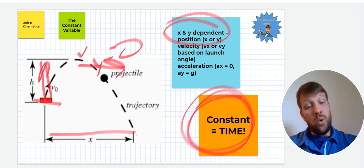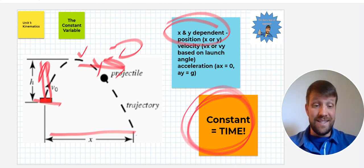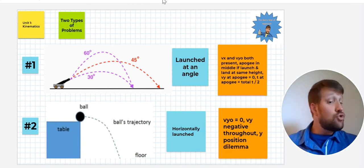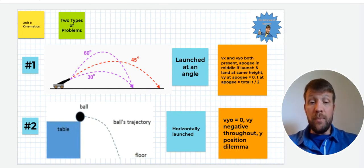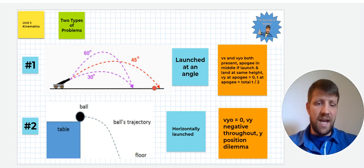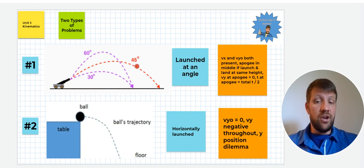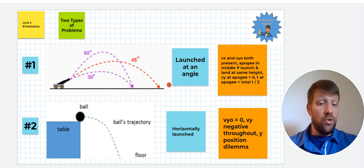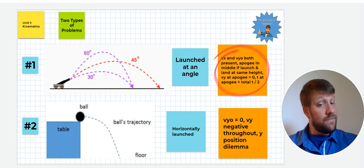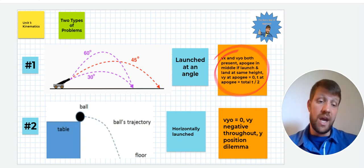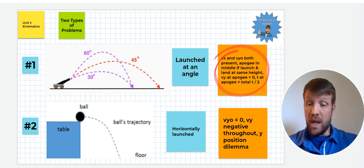There are going to be two types of problems when you start to solve these problems. Number one here is an object launched at an angle. It's going to be launched at some angle, it's going to be denoted, and then land somewhere. Oftentimes these are launched and land at the same height, they won't always be though. Realize that the launch angle will vary and so v x and v y will both be present when it's launched. We're looking at these tips right here for problem type number one. The apogee will be in the middle if the launch and land are at the same height. The v y at that apogee will be zero, and time at the apogee will be the total time divided by two. Those are important reminders there as to how to solve that type of problem.